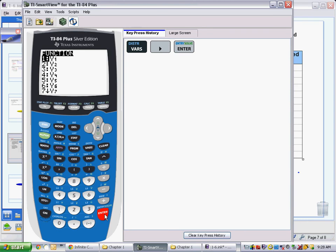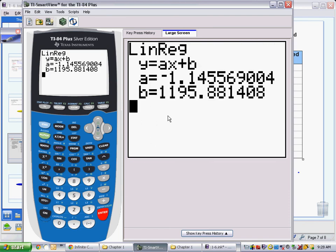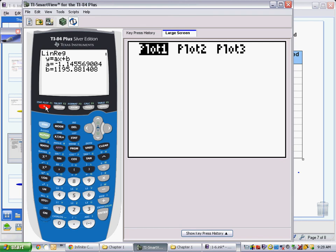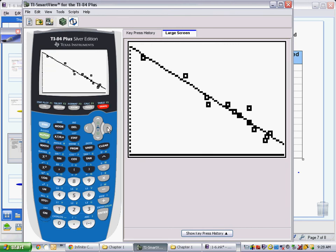I choose number 1 again for putting it into y sub 1 for my function. This will now, when I press enter, not only give me the regression equation, but back in my y equals screen, it has written it into my y sub 1 function. And when I look at my graph, notice the line is in there.